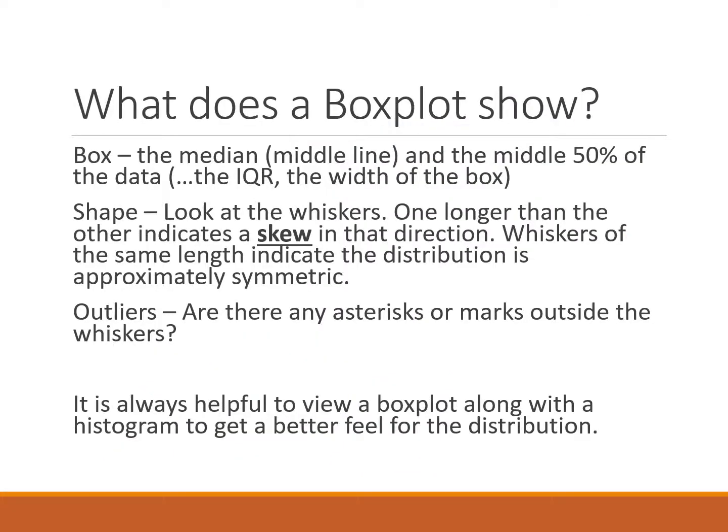When we look at that graph, what does the box plot show? The box is showing the middle 50% of the data, and then that middle line is the median. The shape, if we look at the whiskers, that's telling us is the distribution symmetric if those whiskers are about the same length, or is it skewed to one side or the other. The skew would be towards the longer of the two whiskers. And then outliers are just denoted by asterisks or any marks that aren't attached to the whiskers.